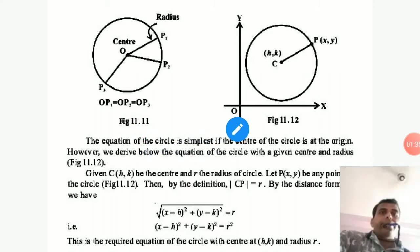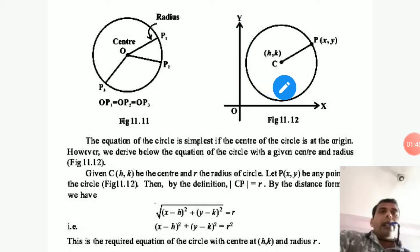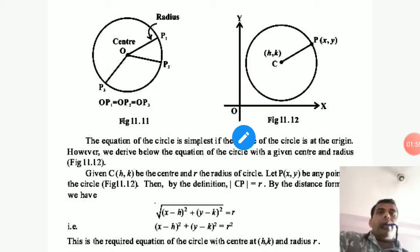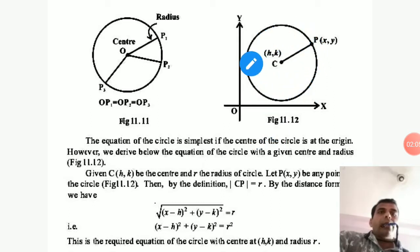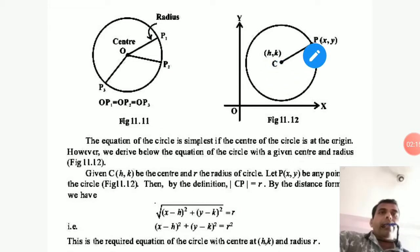Suppose you draw this diagram of a circle on a Cartesian plane — on the coordinate axis, this is the X axis, this is the Y axis. In the coordinate plane there are 4 quadrants: 1st, 2nd, 3rd, and 4th. Suppose this circle lies in the first quadrant, with center C at coordinates (H, K), and point P is any point on the circumference with coordinates (X, Y).